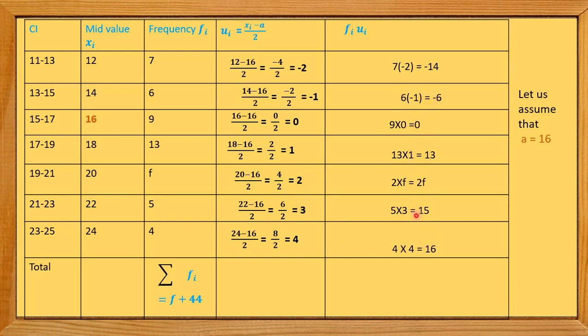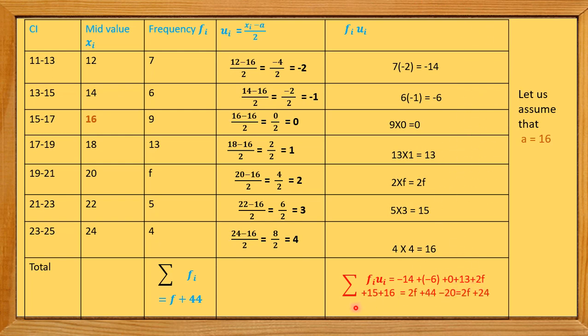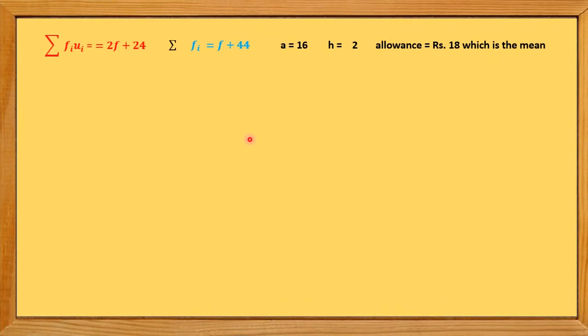Summing all fi×ui values with their signs: −14 − 6 + 0 + 13 + 2f + 15 + 16 = 2f + 44 − 20 = 2f + 24. So Σfi = f + 44 and Σfiui = 2f + 24.